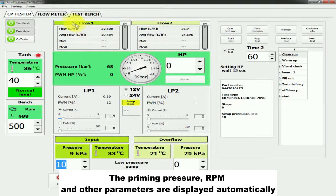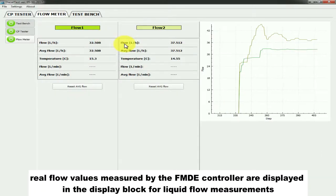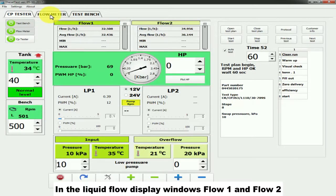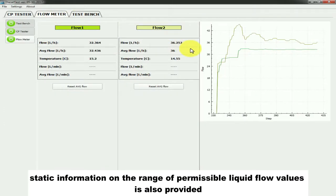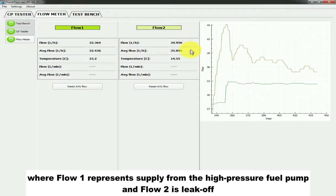After the start of the test, real flow values measured by the FMDE controller are displayed in the display block for liquid flow measurements. In the liquid flow display windows, flow 1 and flow 2, static information on the range of permissible liquid flow values is provided, where flow 1 represents supply from the high-pressure fuel pump and flow 2 is leak off.